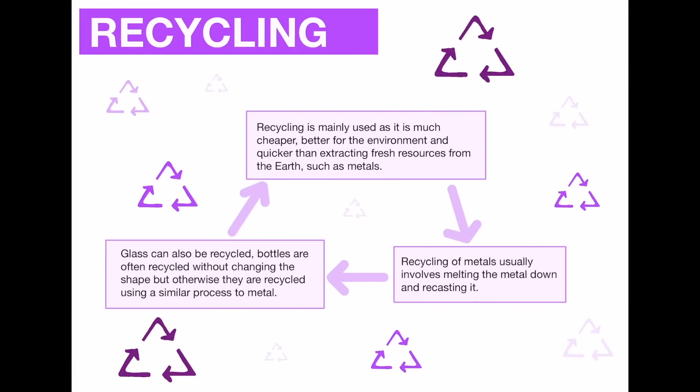Recycling is mainly used because it is much cheaper, better for the environment, and quicker than extracting fresh resources from the earth such as metals. Recycling of metals usually involves melting the metal down and recasting it in the form of whatever you want to use it for. In the same way, glass can also be recycled — bottles are often recycled without changing shape, or otherwise crushed down, melted, and recast.